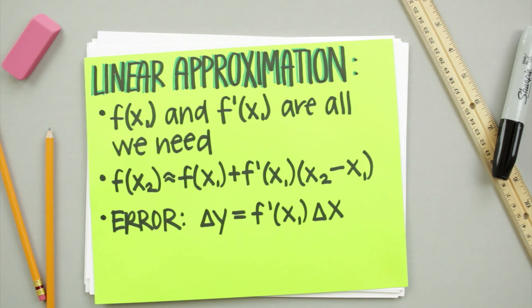If we want to calculate the error in our linear approximation, all we're looking for is the change in y, which we can find by multiplying the derivative at x1 by the change in x.